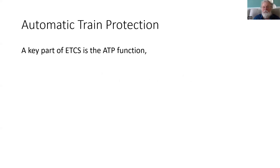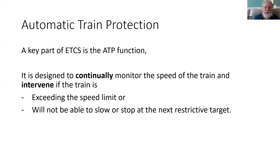A key part of ETCS is the automatic train protection function. This is the functionality which continually monitors the speed of the train and intervenes if the train is going to exceed the speed limit or will not be able to slow down or stop at the next restrictive target. It is a continual measurement, and as the train is approaching a reduced speed it will be continually checking that the train is slowing down.